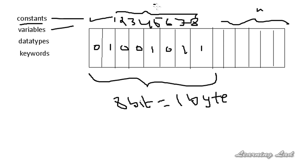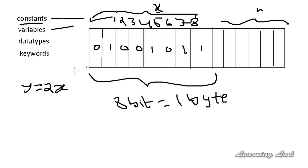For example, let's give a name called x to this byte. This name given to the memory address or the memory location is called a variable. So a variable is nothing but the name given to a memory location in order to access it easily. When we create a variable in our program and refer to it — for example, y = 2x, where y is another variable — x will refer to whatever value is stored in that memory location.